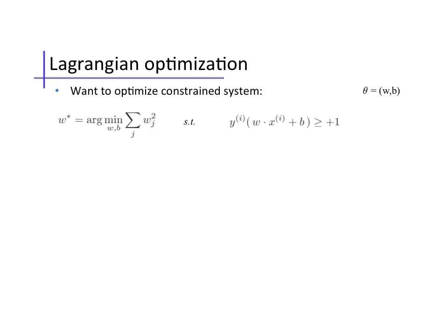To better solve this constrained optimization, we'll use Lagrangian optimization. Let's first rewrite our constraint slightly so that it's a non-positive inequality. Now, let's generically refer to our cost function here as f of theta, and to the constraint for data point i as g_i of theta, where theta just means all the parameters, both w and b.